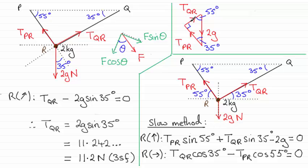so it would be the sine, the sine of 35 degrees. Well, that would equal the opposite side, which is the tension QR, divided by the hypotenuse, which is represented as 2g.